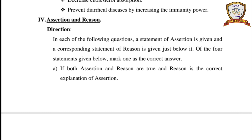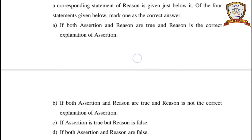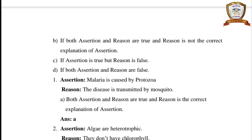Assertion and Reason questions. In each of the following questions, a statement of assertion is given and a corresponding statement of reason is given just below it. Mark one as the correct answer: A — both assertion and reason are true and reason is the correct explanation of assertion; B — both are true but reason is not the correct explanation; C — assertion is true but reason is false; D — both assertion and reason are false.